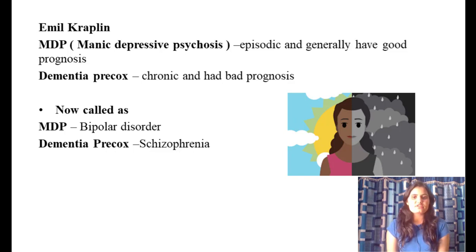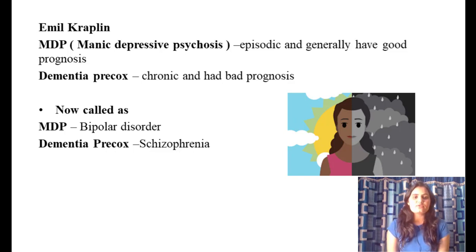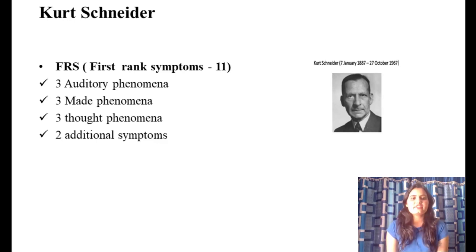Kraepelin said manic depressive psychosis is episodic and generally has a good prognosis, whereas dementia praecox is a chronic condition with a bad prognosis. Today, manic depressive psychosis is known as bipolar disorder, and dementia praecox is known as schizophrenia.